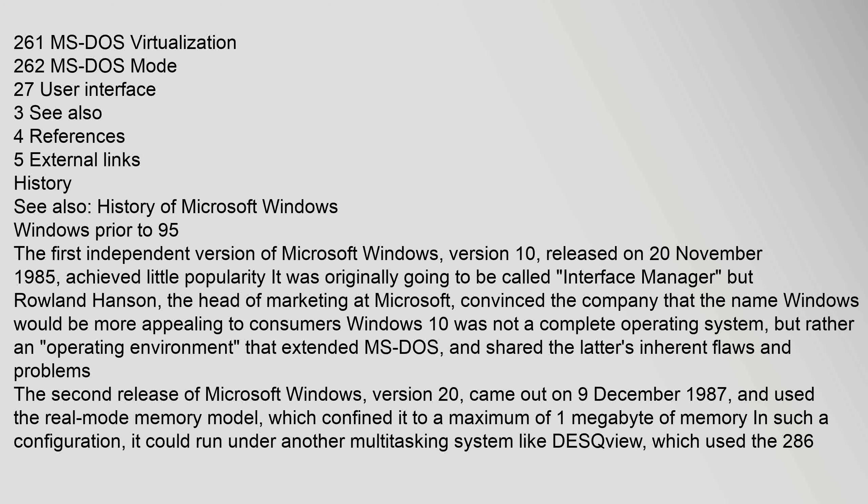The first independent version of Microsoft Windows, version 1.0, released on 20 November 1985, achieved little popularity. It was originally going to be called Interface Manager, but Roland Hanson, the head of marketing at Microsoft, convinced the company that the name Windows would be more appealing to consumers. Windows 1.0 was not a complete operating system, but rather an operating environment that extended MS-DOS, and shared the latter's inherent flaws and problems.